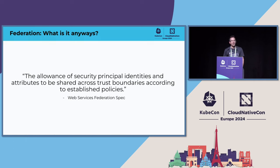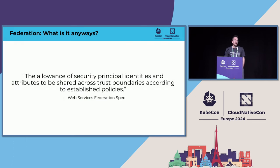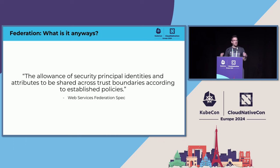Let's start with some simple definitions. It's often overlooked — what is federation? The Web Services Federation spec defines federation as the allowance of security principal identities and attributes to be shared across trust boundaries according to established policies. We have infrastructure, applications, identity providers — a lot of security context spread across various applications and infrastructure in our ecosystem. In order to answer access control decisions and certain policies, we need to be able to share that context across these boundaries and evaluate these policies across different contexts.